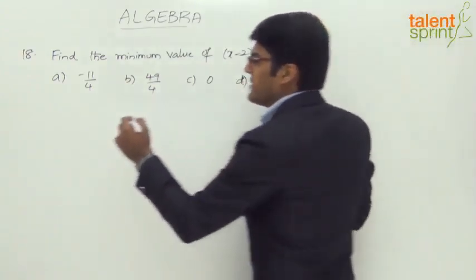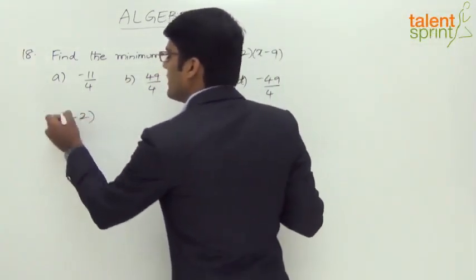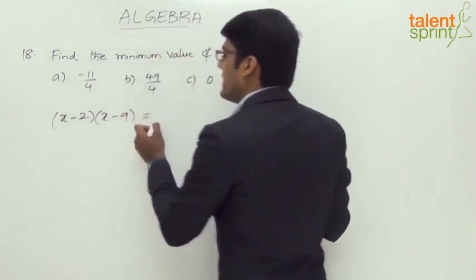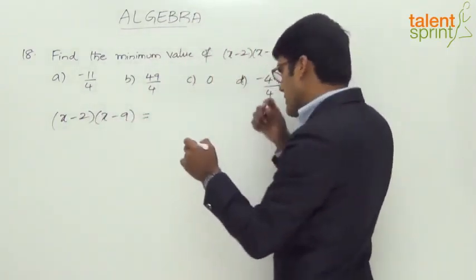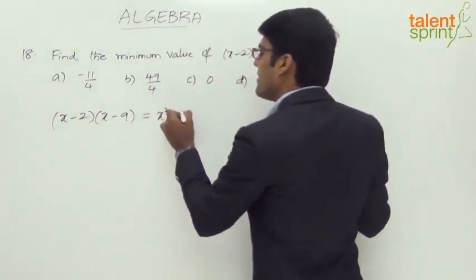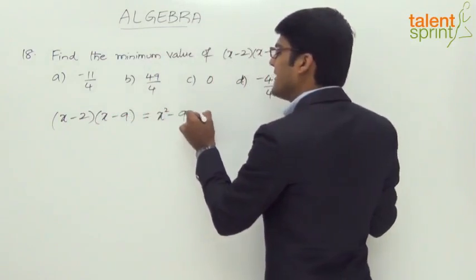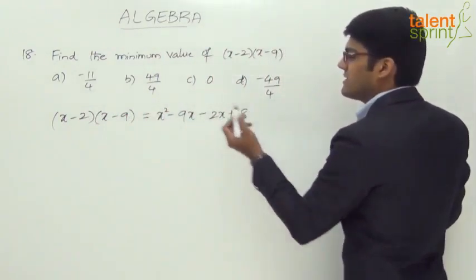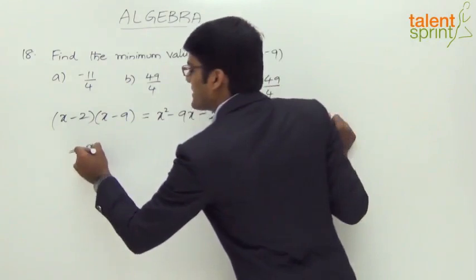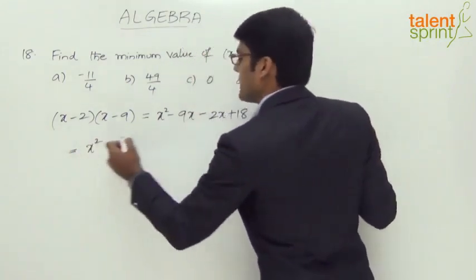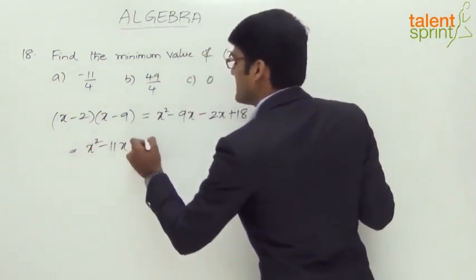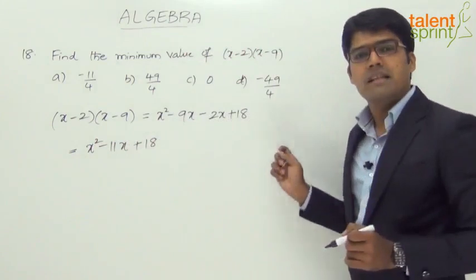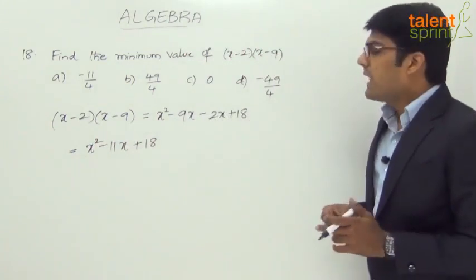The expression here is (x-2) into (x-9). Let us simplify this. Expanding, we get x squared minus 9x minus 2x plus 18, which gives us x squared minus 11x plus 18.